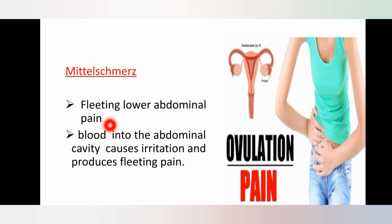The next indicator is Mittelschmerz, also called ovulation pain. It is defined as fleeting lower abdominal pain. The reason for this pain is that when ovulation occurs, bleeding occurs into the antrum of the follicle, and a small amount of blood escapes into the abdominal cavity. This blood causes irritation, which leads to the production of pain — that is called fleeting pain.